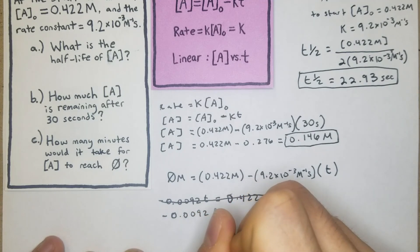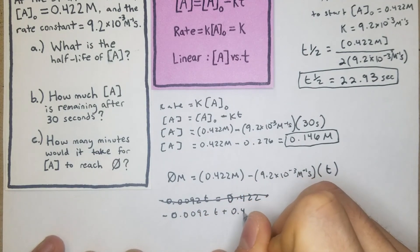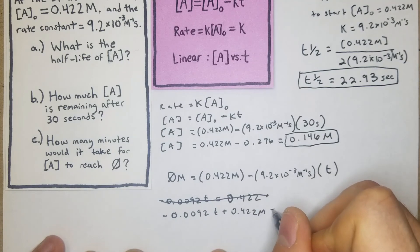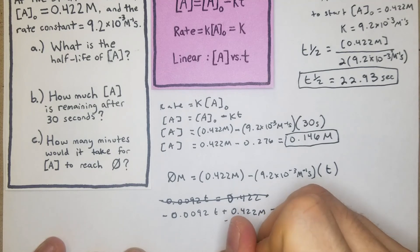I think it's easier this way. So we'll take 0.0092t plus 0.422 M is equal to 0. So from there what we can do is we can minus 0.422 from both sides.